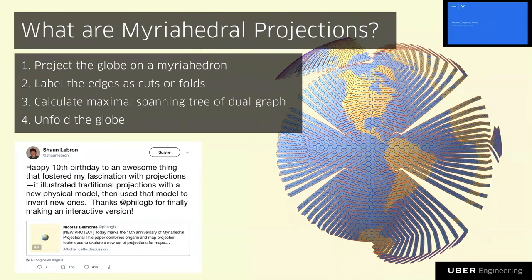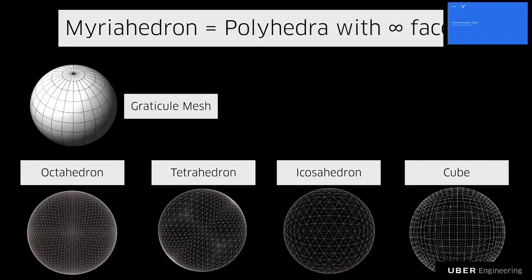Van Wijk used a new physical model to illustrate traditional projections, but then took advantage of this model to create new projections. A myriahedron — a myriad meaning a thousand or more — is a polyhedra with many faces, an infinity of faces, so that when you unfold them you don't generate any distortion. There are many ways to create spherical myriahedrons: you could follow a graticule mesh with edges at parallels and meridians, or recursively subdivide objects — for example, an icosahedron where each triangular face is divided into four smaller faces, like a fractal.